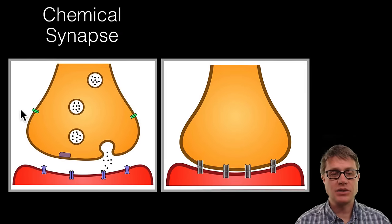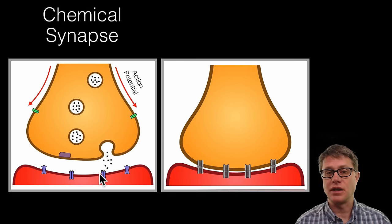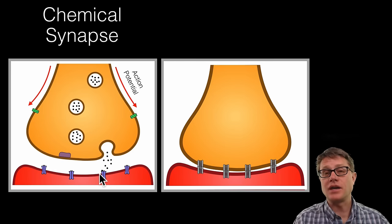In a chemical synapse an action potential moves down a nerve, down a neuron. It triggers the release of neurotransmitters into the gap that are going to dock with receptors on the other side. Now that is only one type of synapse.